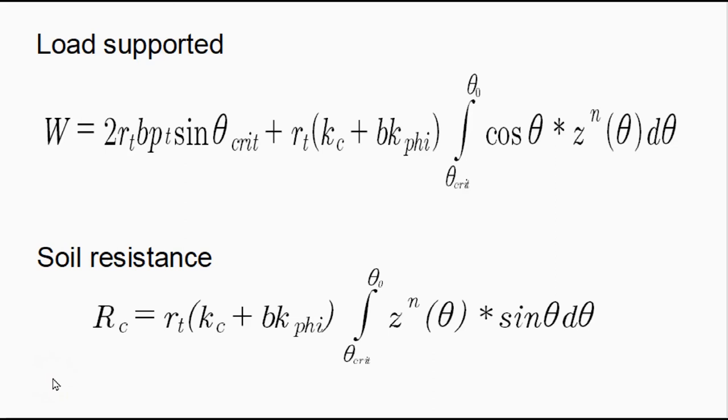For the sake of completeness, I show here the two equilibrium equations for the deformed tire. So this is the weight supported. All I'd like to point out is there are two terms. So the first term here, this is the weight taken by the flat portion of the tire. Very straightforward. That's just a closed form solution. And this is the load supported by the curved portion of the tire. For the soil resistance, there's only one term to evaluate, and this is the resistance developed on the curved portion of the tire.